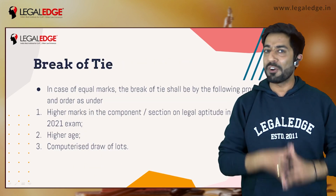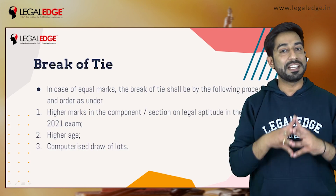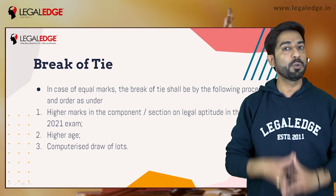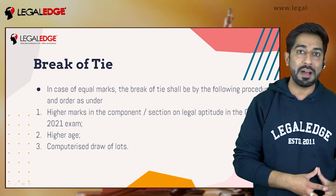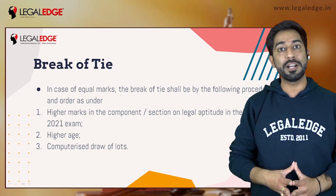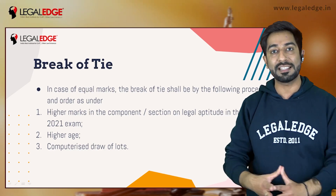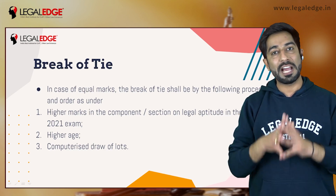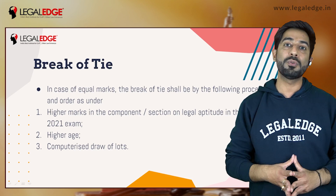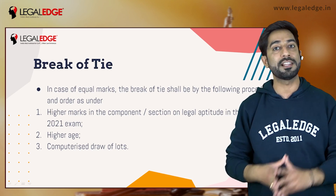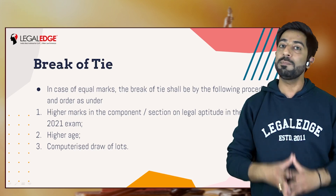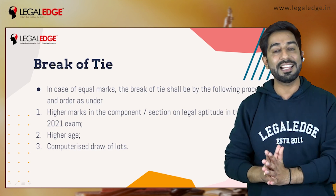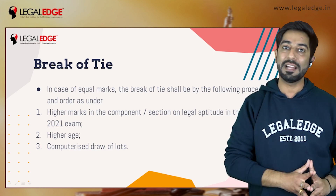Now let's talk about the break of tie. The break of tie is an interesting rule that applies when two students have exactly equal marks and only one can get admission into a national law school. In such cases, first the marks scored in the legal aptitude section are compared. The student with higher marks in the legal aptitude section gets the admission, and the one with lower marks does not.